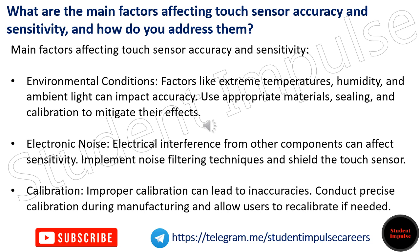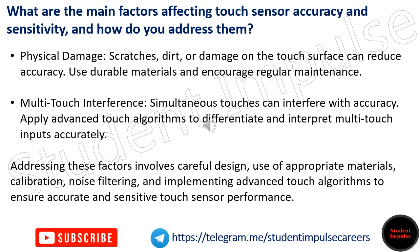Improper calibration can lead to inaccuracies; conduct precise calibration during manufacturing and allow users to recalibrate if needed. Physical damage such as scratches, dirt, or damage on the touch surface can reduce accuracy — use durable materials and encourage regular maintenance. Simultaneous multi-touch inputs can interfere with accuracy; apply advanced touch algorithms to differentiate and interpret multi-touch inputs accurately. Addressing these factors involves careful design, use of appropriate materials, calibration, noise filtering, and advanced touch algorithms.